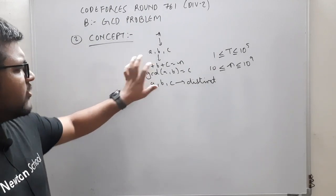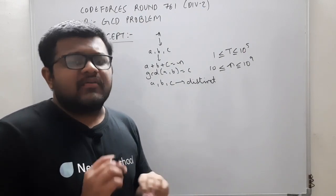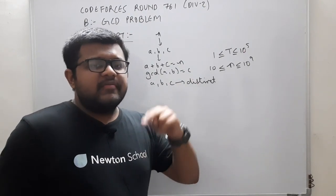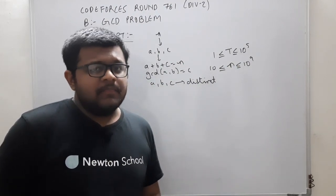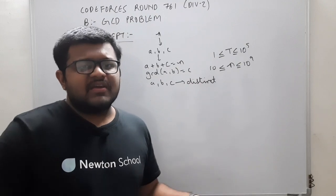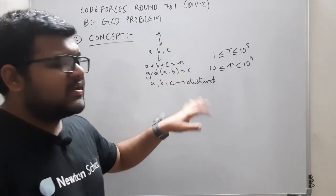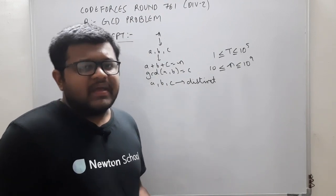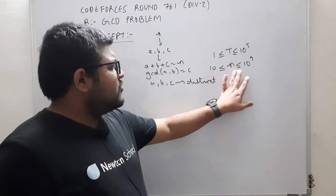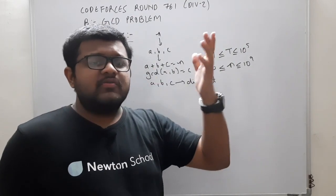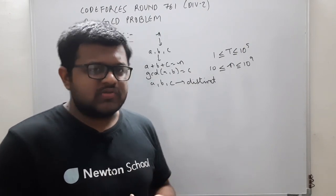One approach could be to run two for loops for a and b — say a from 1 to n, and b from 1 to n — then c equals n minus a minus b, and check the conditions. But if we use two for loops for a and b, that becomes O(n²), and n can be up to 10^9, so n² is 10^18. We cannot do that — we need a more efficient and conceptual approach.